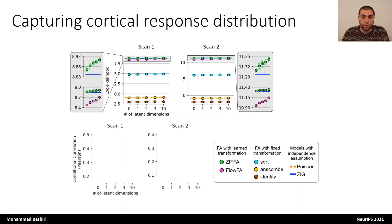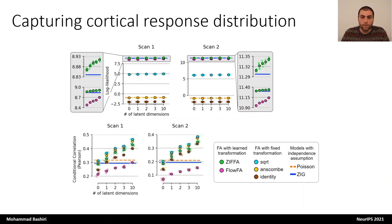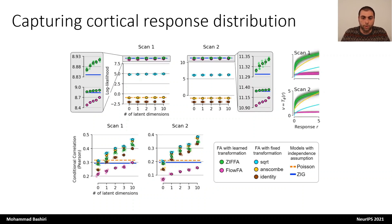We also looked at the correlation between the predicted firing rate and the recorded responses. Interestingly, we see that the ZFA model performs slightly worse compared to models with fixed transformation, which reflects that fitting models on likelihood does not necessarily yield optimal correlation. Nevertheless, with increasing latent dimensions, the correlation of the ZFA model improved significantly beyond the control models. Here are the per-neuron transformations learned by the models, which were quite different from the fixed transformations.